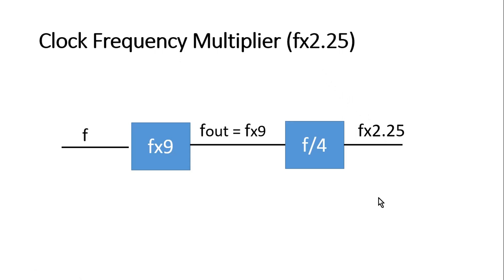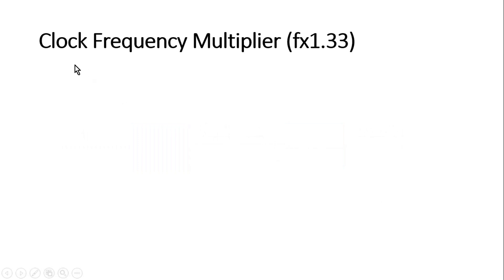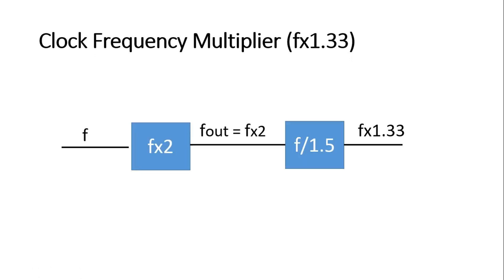Now I am moving towards the last example, which is very interesting. The design challenge is to multiply the input frequency by 1.33. Let me reveal its design. Here I use a frequency multiplier that multiplies by 2, giving F × 2. The frequency divider here is a little more complex — it divides by 1.5. So F × 2 divided by 1.5 gives F × 1.33, which is the expected frequency.